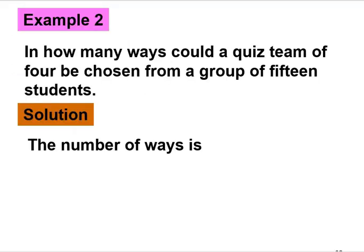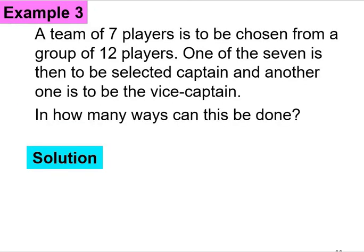Next let's look at example 2. In how many ways could a quiz team of 4 be chosen from a group of 15 students? We want to choose 4 students from 15, so 15C4. We can use calculator directly or use the formula which is 15 factorial over 15 minus 4, which is 11 factorial, multiply with 4 factorial. The answer is 1365.